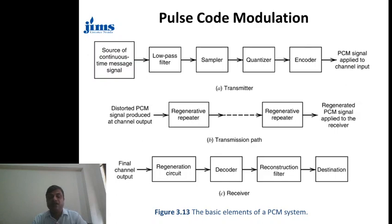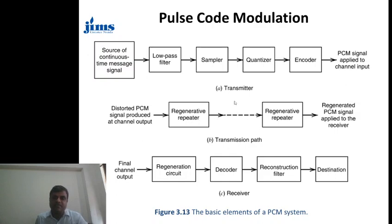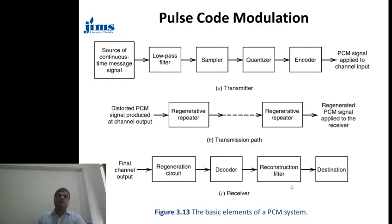So the steps are: convert the signal to a band-limited signal, take the sampling, quantize, then code — after coding it becomes a digital signal. At the transmitter path, the signal will be distorted during transmission. So once the PCM signal is received, it first passes through a regenerator circuit to remove noise, then through a decoder (since an encoder was used at the transmitter), and then through a reconstruction filter, which converts it back into the analog signal. These are the building blocks of PCM.